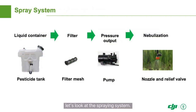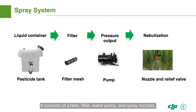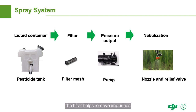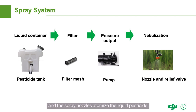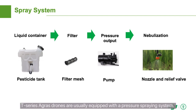Finally, let's look at the spraying system. It consists of a tank, filter, water pump, and spray nozzles. The tank carries the liquid pesticide. The filter helps remove impurities. The water pump generates pressure. And the spray nozzles atomize the liquid pesticide. T-Series Agris drones are usually equipped with a pressure spraying system. We recommend using water-based pesticides to avoid clogging the nozzle.